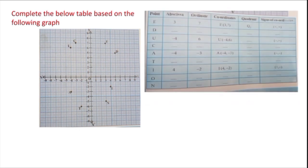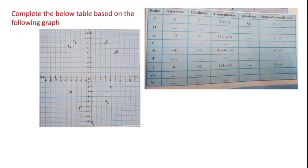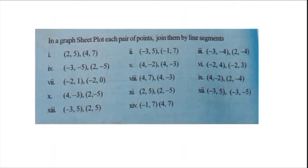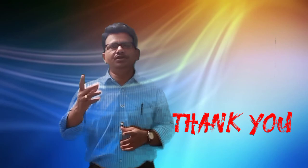Now second one. Complete the below table based on the following graph. Here is the table. I am giving beside the picture: points, objects, coordinates. So here some are missed. What are the missed? You have to write. Then you will understand the concept. Now third one. In a graph sheet, plot each pair of points and join them by line segment. So students, you do this homework and show your subject teacher. Thank you. Good luck.